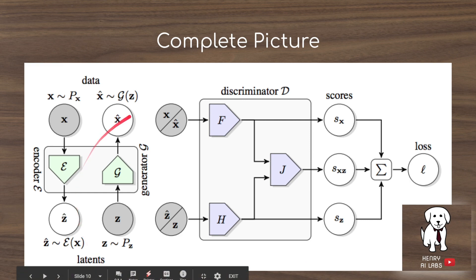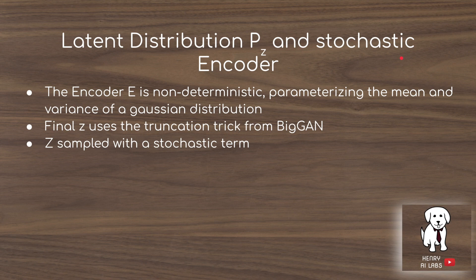This is the complete picture of the BigBiGAN framework. One thing they do is that when mapping E(X) to Z, they don't deterministically map it. Instead, E(X) predicts the mean and variance of a Gaussian prior on Z. When Z is sampled for future images, there's an additional stochastic epsilon term sampled from another distribution.